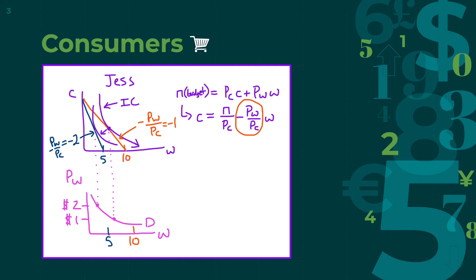We can now plot and connect two points on the demand curve, one where the price of wheat is $1 and she can buy 10 units, and another where the price of wheat is $2 and she can buy 5 units. As we can now see, the supply curve slopes upwards, while the demand curve slopes downwards, so we can say that supply soars and demand dies.